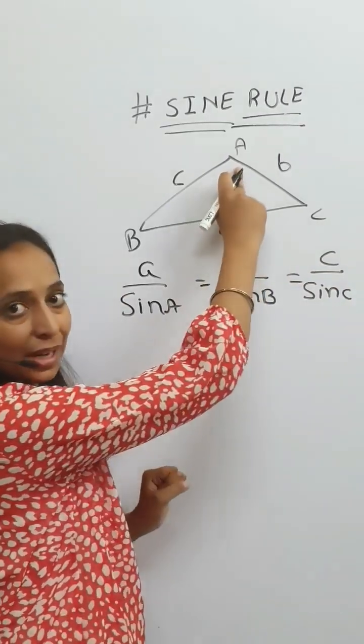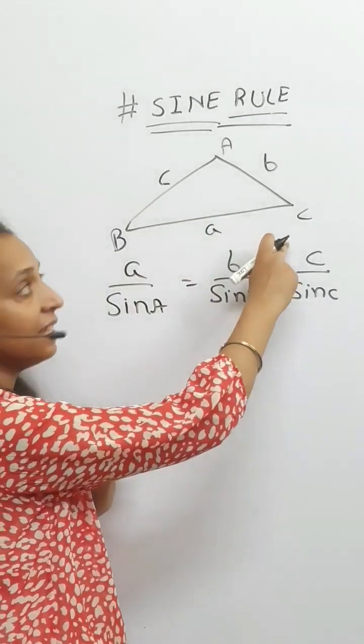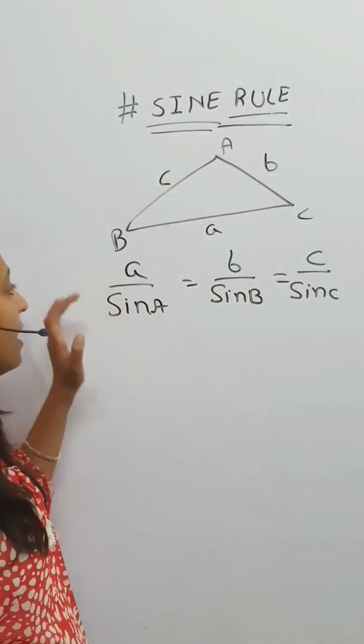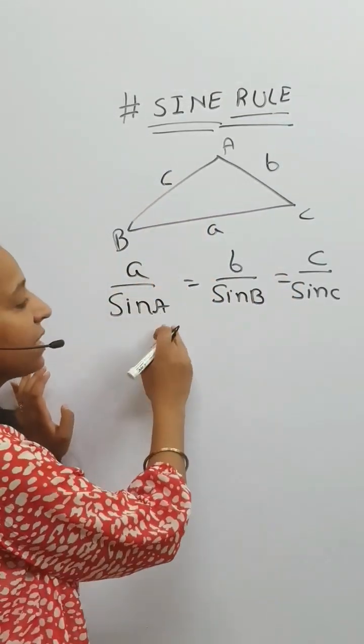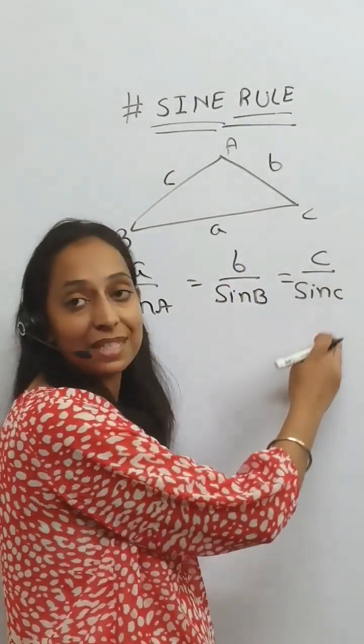Side a is opposite to angle A, side b is opposite to angle B, and side c is opposite to angle C. So we can write a over sine A equals b over sine B equals c over sine C.